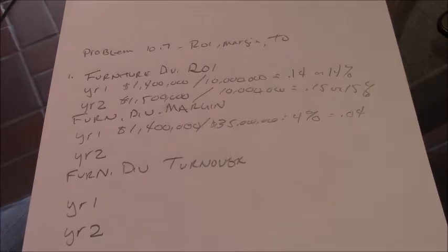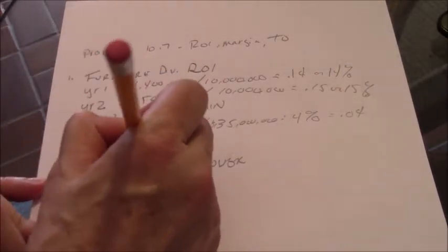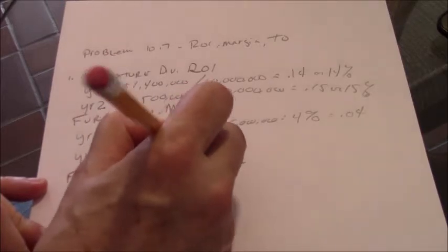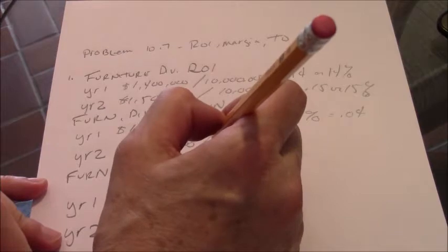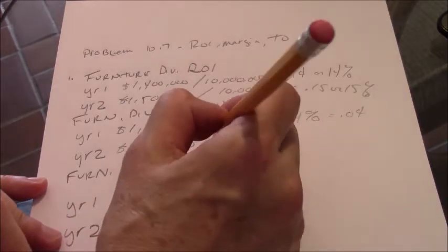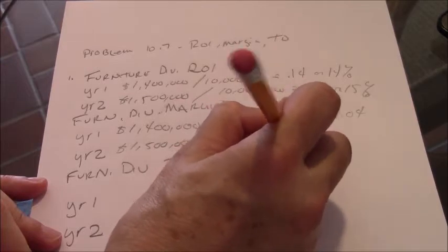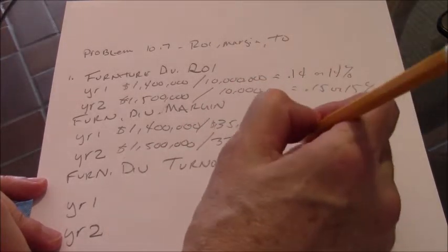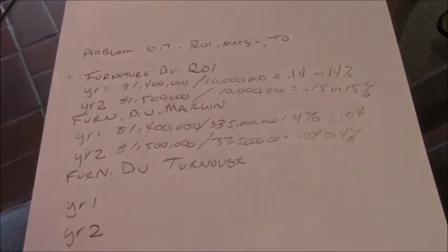And let's look at year 2. We had 1.5 million in operating income. And we had 3.75. And that too is equal to 0.04 or 4%.